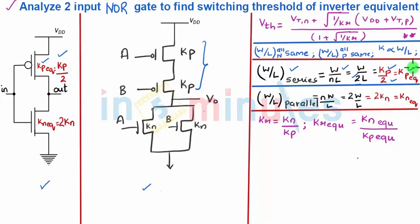Similarly, for transistors connected in parallel, if W/L is the same for all N parallel transistors, the equivalent W/L is N times W/L. Here N equals 2, giving twice W/L. Since W/L is directly proportional to K, this is nothing but twice KN, so my KN equivalent will be 2KN.